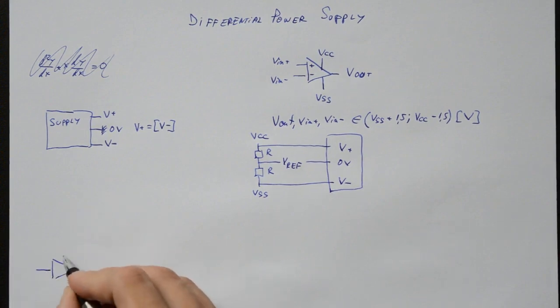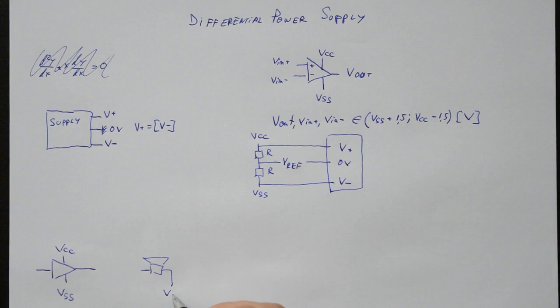The second problem comes when driving a higher current load, like a speaker. Your output is referenced around the half supply voltage, and the speaker is directly connected to ground.